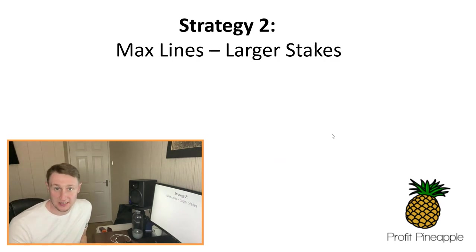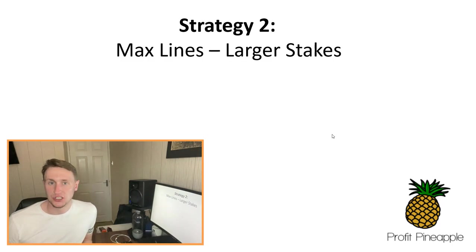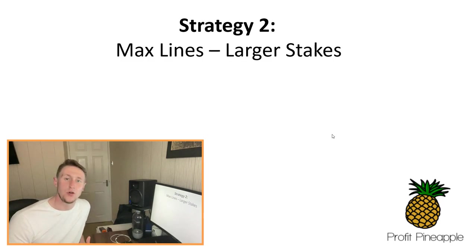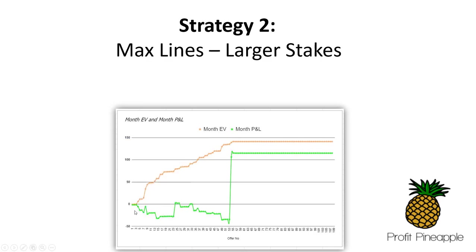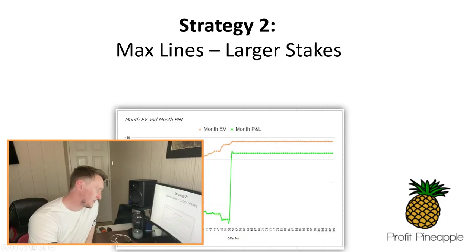Strategy two is the opposite - again max lines, as many as possible on the slot, but this time you're using larger stakes like £1 and £2 spins instead of 10p and 20p. Using the high variance strategy, you can see on the graph I was just continually losing money, then at offer 23 I have a win which puts me back up to zero, then I start to lose again, and at offer 53 a massive win puts me back just underneath EV and back in profit.